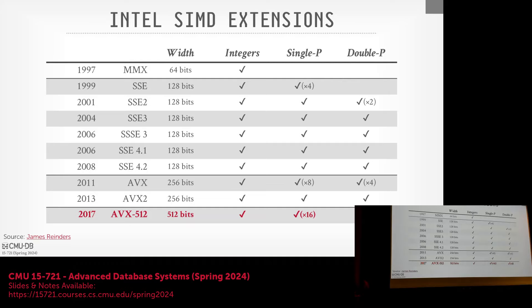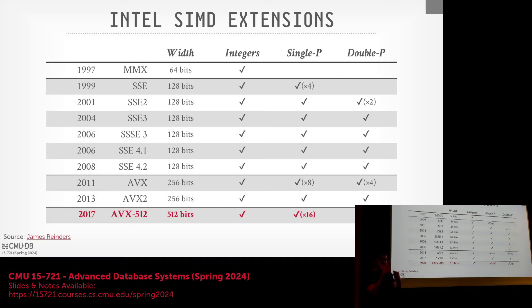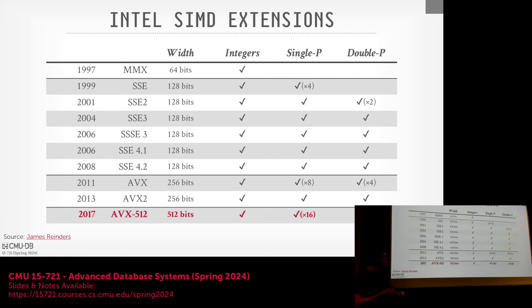This table shows the history of Intel's different SIMD extensions over the years. The one we care about is AVX512, which came out in 2017. It has 512-bit registers, supports integers, single-precision, and double-precision floats. The big addition is support for permutation and predicate masks — allowing us to specify which lanes an operation should actually apply to. Prior to AVX512, database systems had to emulate this using a separate register to store a bitmask.